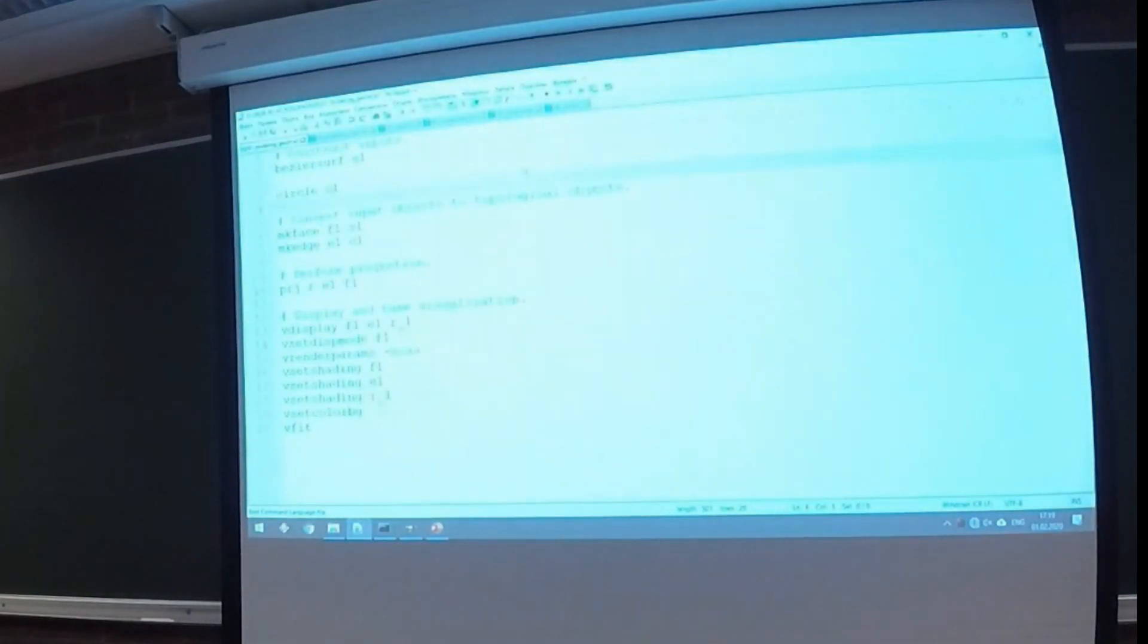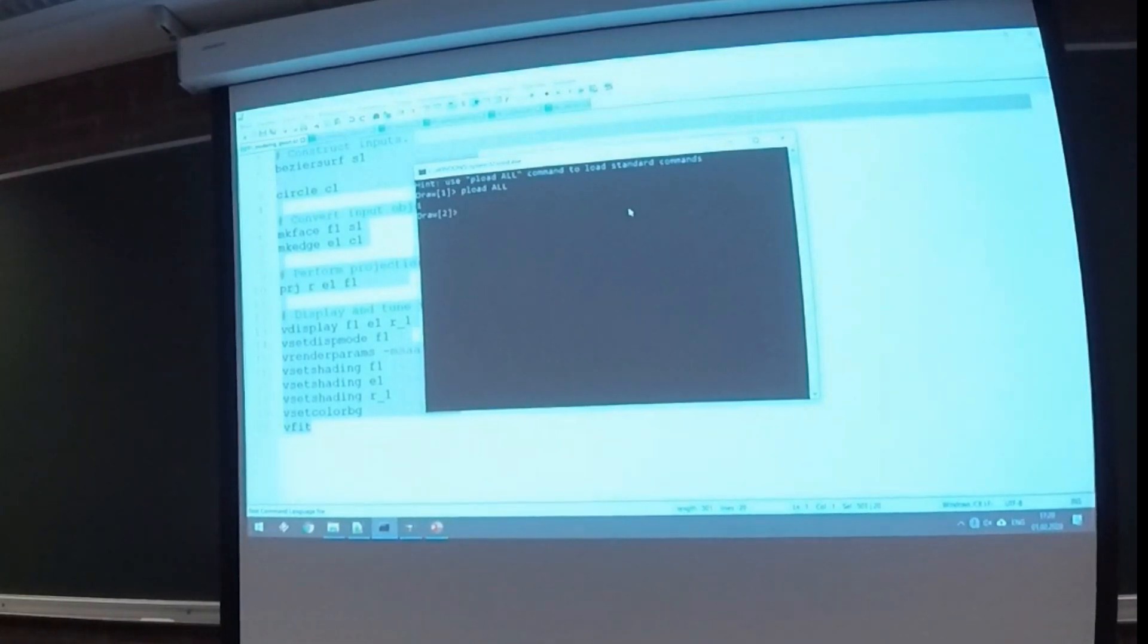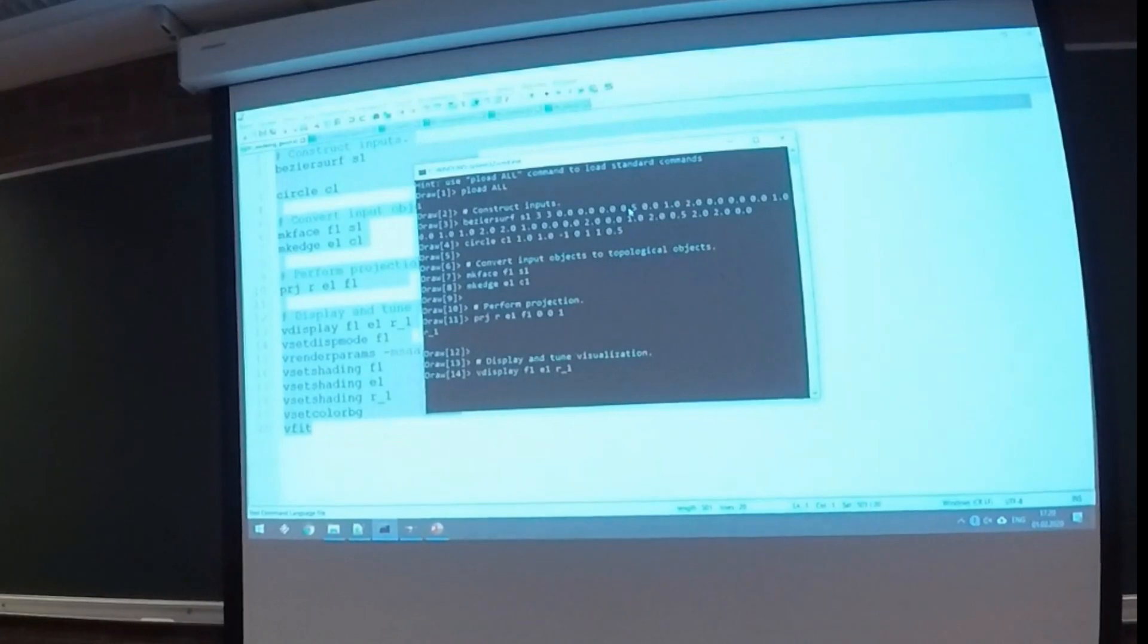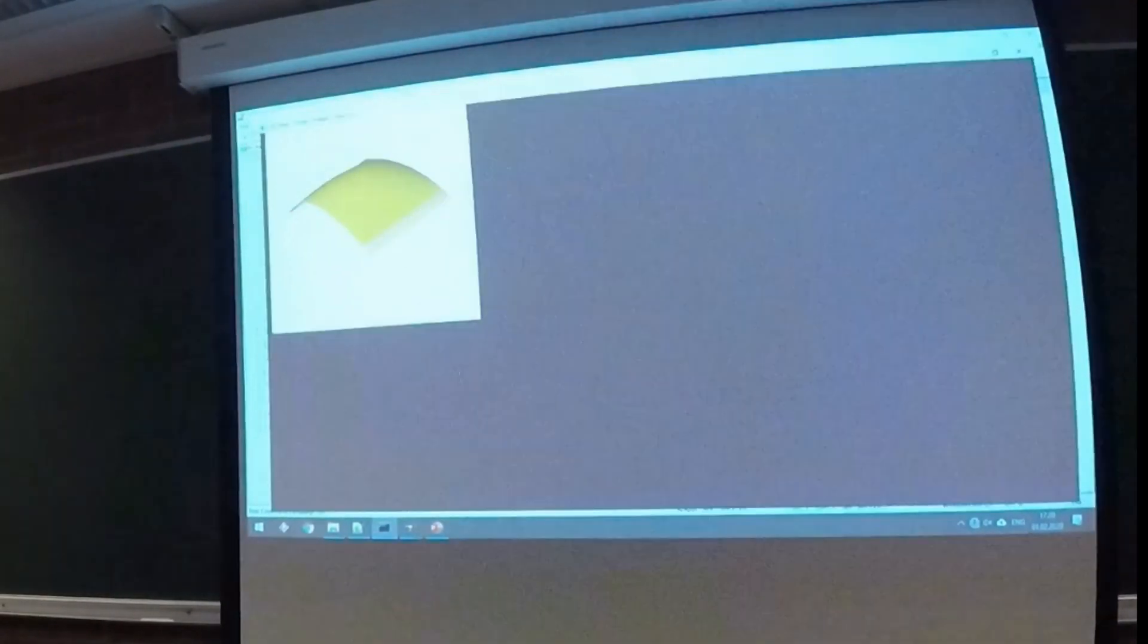Here it is. A bit bigger. Here we have a block constructing our inputs. After that, we have to convert geometric objects to their topological counterparts according to their common definition, which projects a curve on the surface. We convert them. Here we perform the projection. What to project, where to project, projection direction. Here it is. And the variable name to show the result. After that, we can display inputs and output on the script. Here you can see our standard console, which is called DRAW. And here we can launch this script. And here is the result.